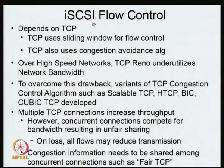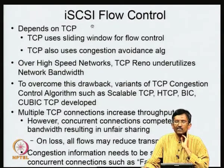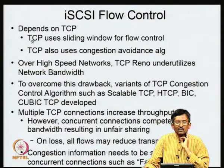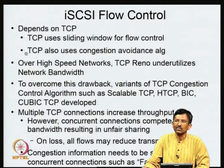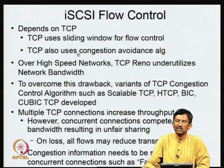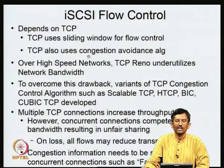Now let us look at iSCSI flow control. Fibre Channel uses credit-based flow control. iSCSI is layered on top of TCP, and TCP uses sliding window for flow control, along with a congestion avoidance algorithm. TCP assumes that the end devices are intelligent but the network is dumb. Because the network is dumb, it does not have mechanisms to help realize available throughput — the endpoints must probe the system to figure out how much bandwidth is there using a control-theoretic model called the congestion avoidance algorithm.